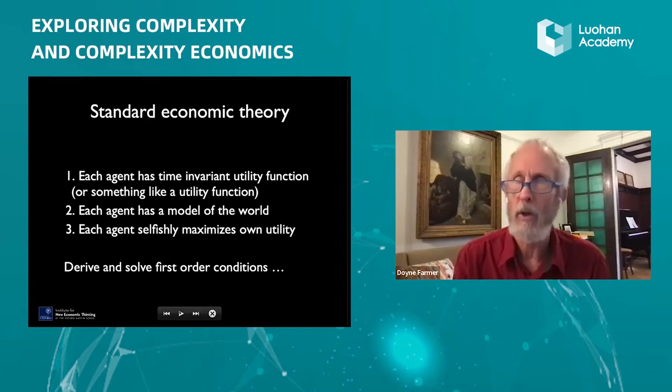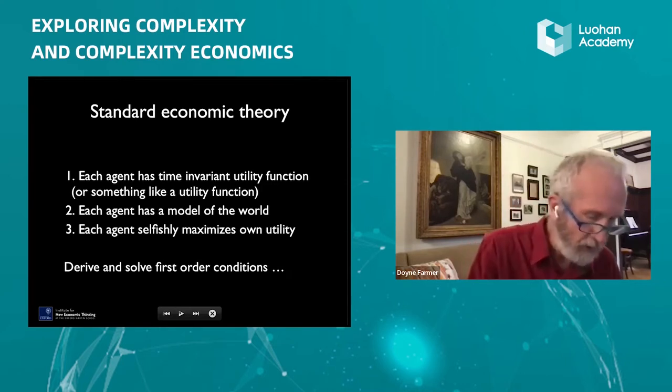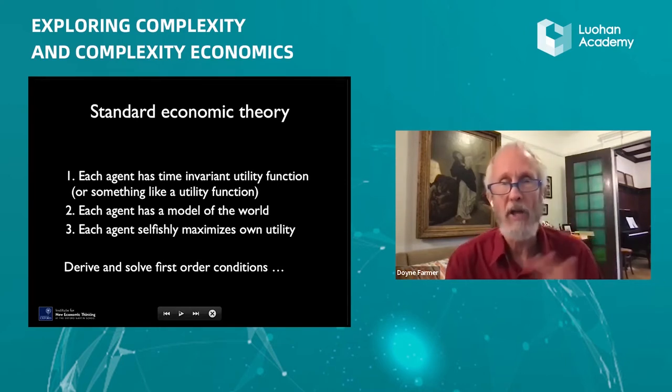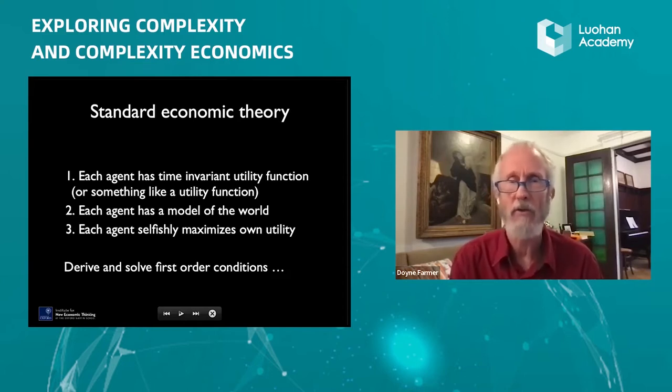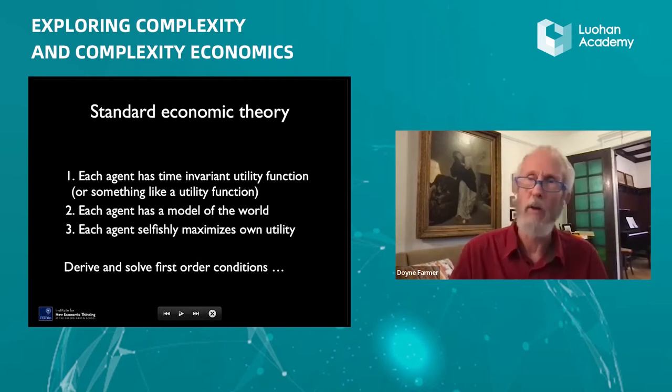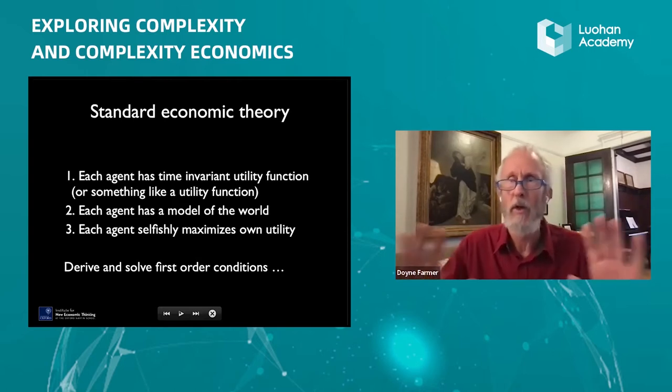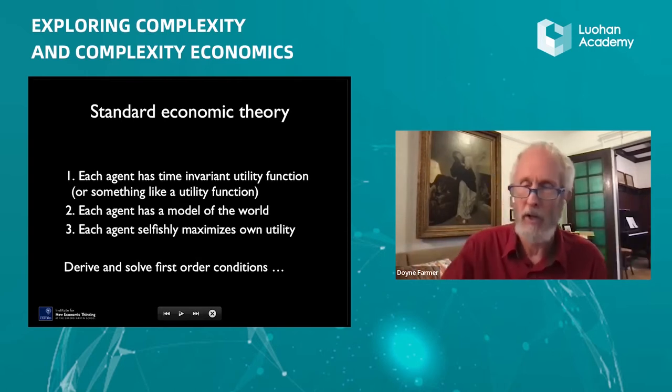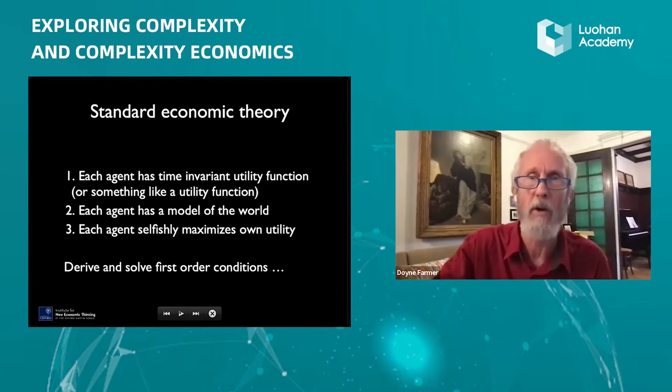I think everybody's probably familiar with the way standard economic theory works. You have agents with utility functions or something like it. Each agent has a model of the world, and each agent selfishly maximizes their own utility. You use this framework to derive first-order conditions, and that's essentially the script that every theoretical economics paper, almost every one, follows.